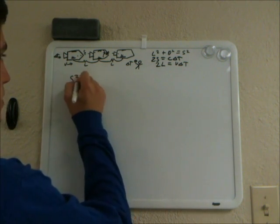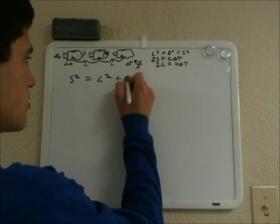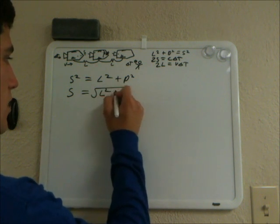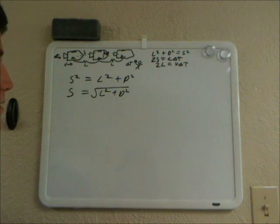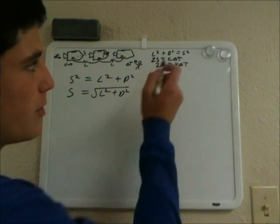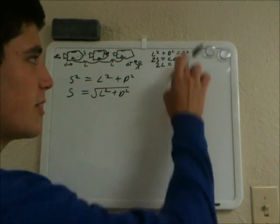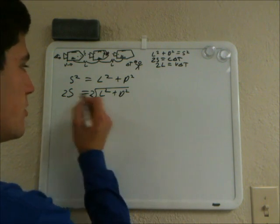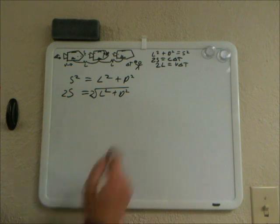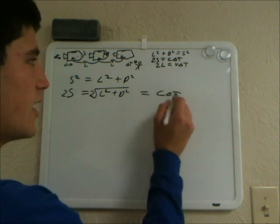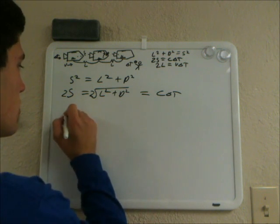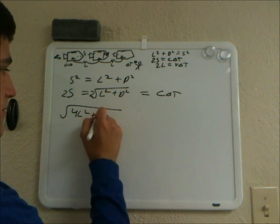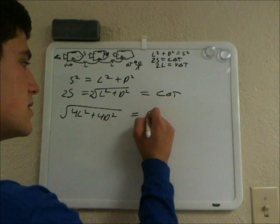We start with S squared equals L squared plus D squared, and we can write S equals the square root of L squared plus D squared. Now, to get all three equations involved, we're going to multiply both sides by 2. We get 2S equals 2 times the square root of L squared plus D squared, which also equals C delta T, because C delta T equals 2S. So distributing the 2, we get the square root of 4L squared plus 4D squared equals C delta T.